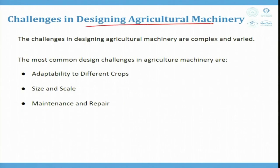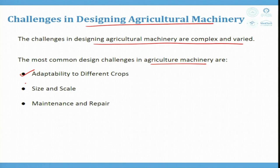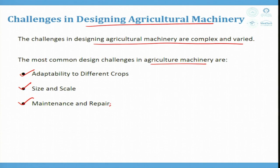Challenges in designing agriculture machinery are complex and varied. The most common challenges are: adaptability to different crops — machinery must be versatile to suit diverse crop requirements; size and scale — machinery should be scalable for varying farm sizes and working hours; and maintenance and repair — for example, an electric vehicle needs a charging station close to the user.